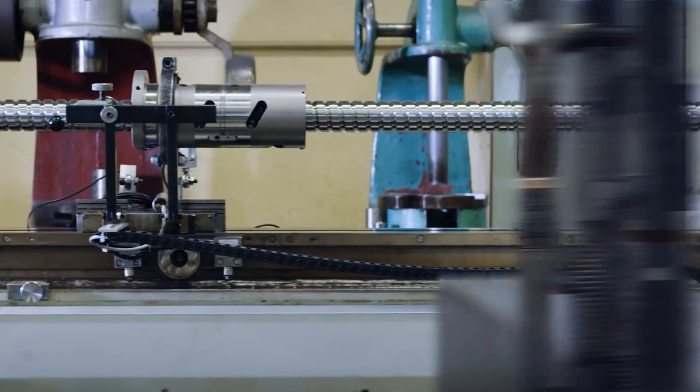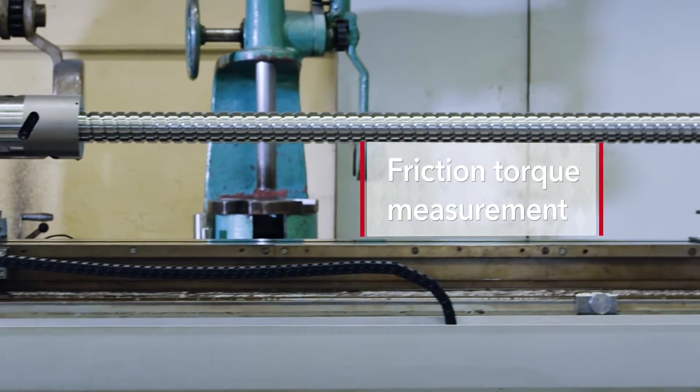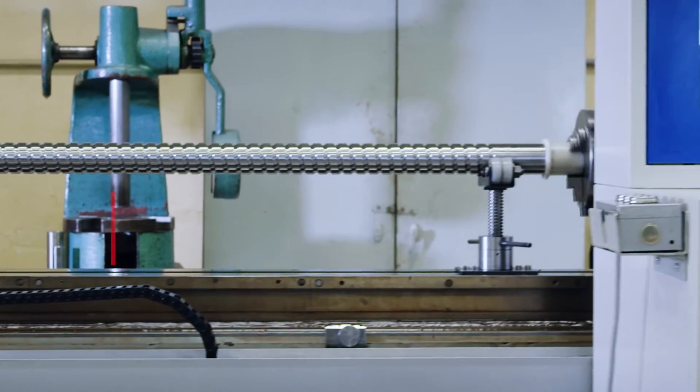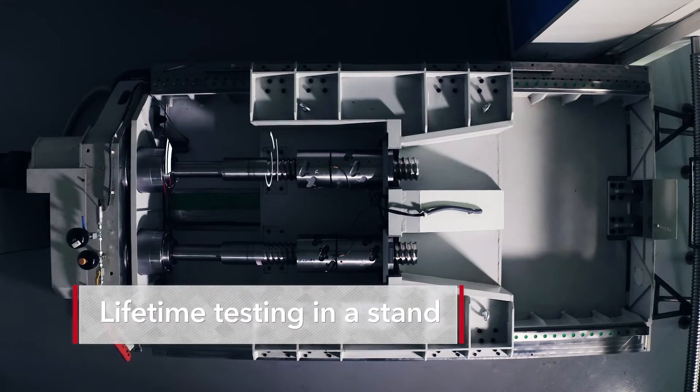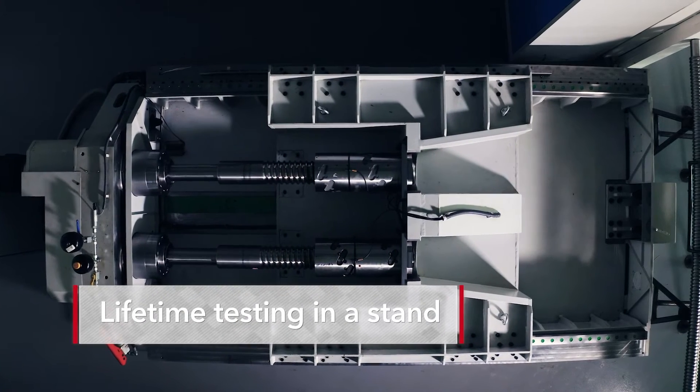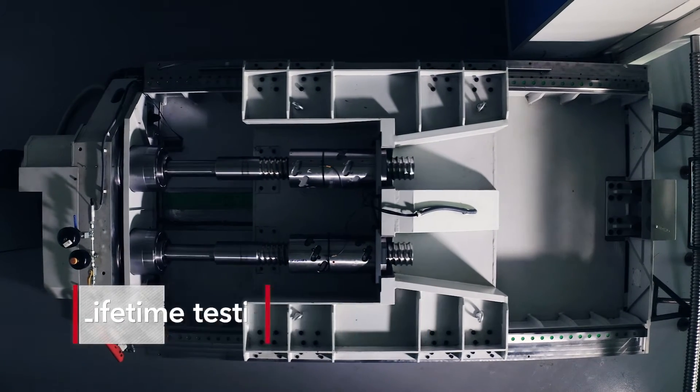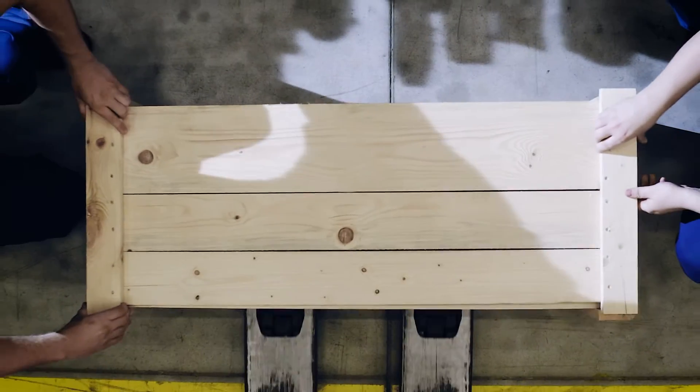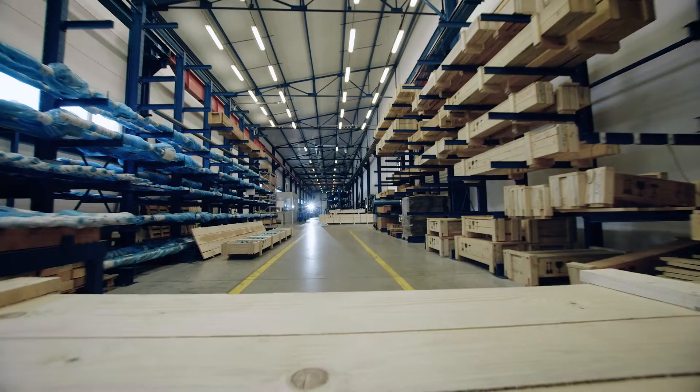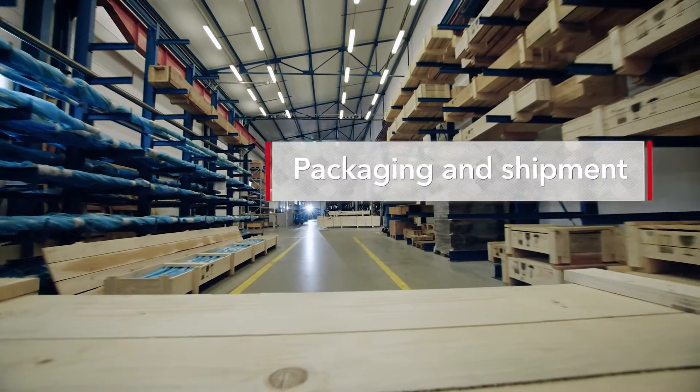To make sure that our ball screws operate flawlessly, we use a test stand for measuring friction torque. We use single-purpose stands for lifetime testing. The lifetime is evaluated on selected specimens and on prototypes. When the assembly and quality testing are complete, the ball screws are packaged and are ready to be shipped to our customers.